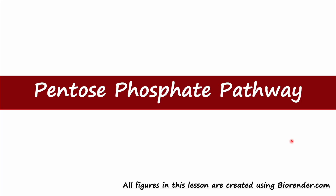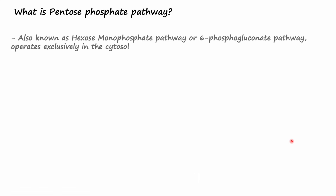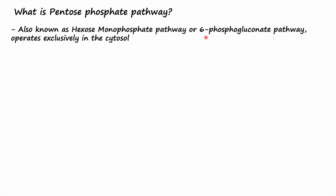Hey everyone. In this lesson we are going to talk about the pentose phosphate pathway. It is also known as the hexose monophosphate pathway or 6-phosphogluconate pathway, and it operates exclusively in the cytosol.